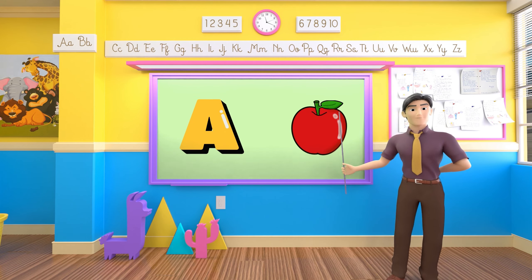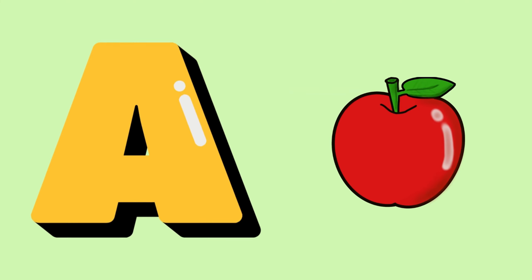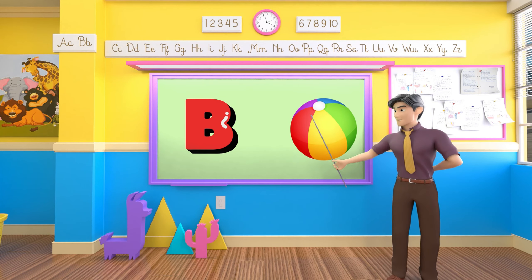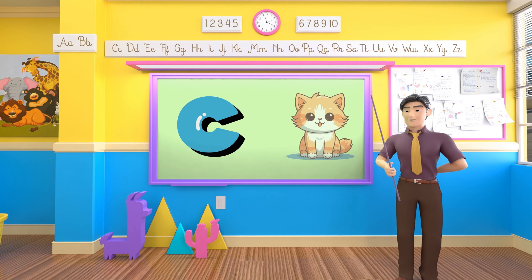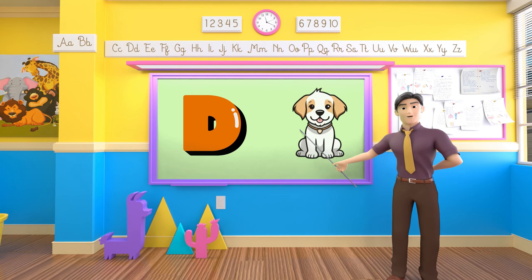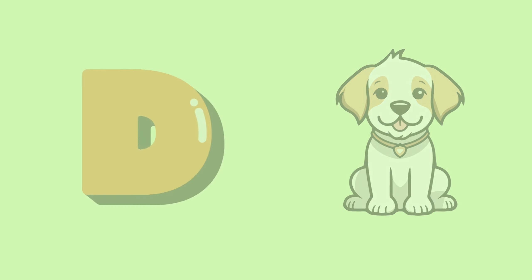A is for apple, a-a-apple. B is for ball, b-b-ball. C is for cat, c-c-cat. D is for doll, d-d-doll.